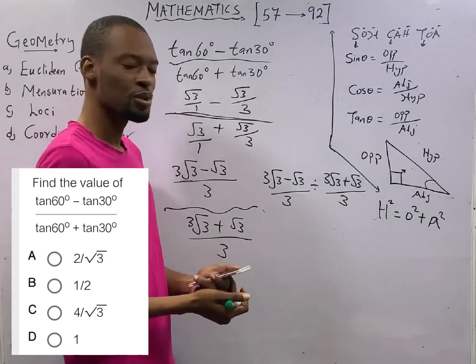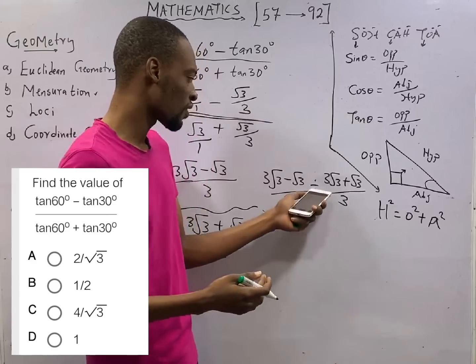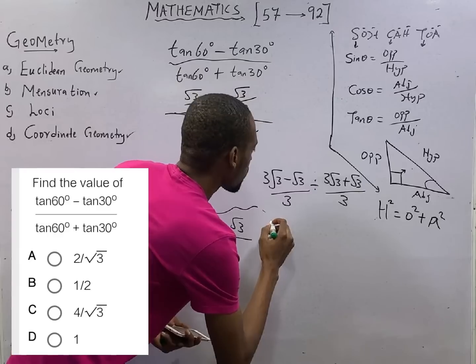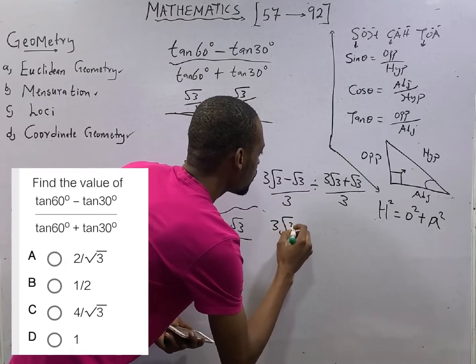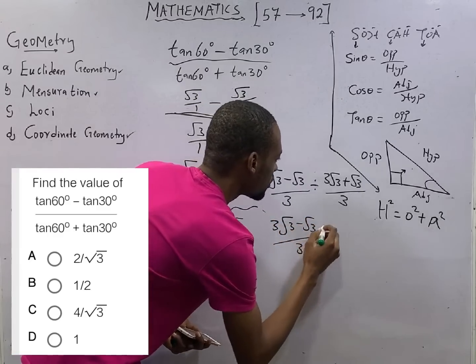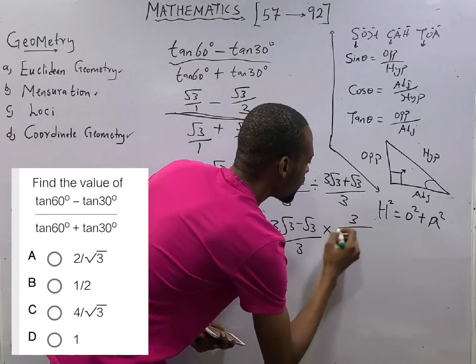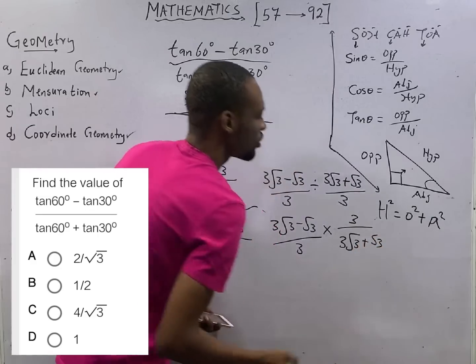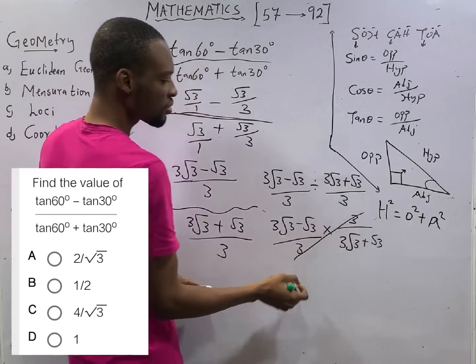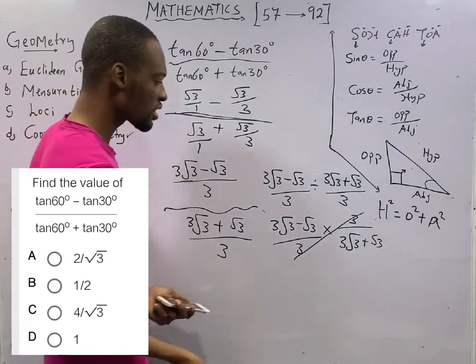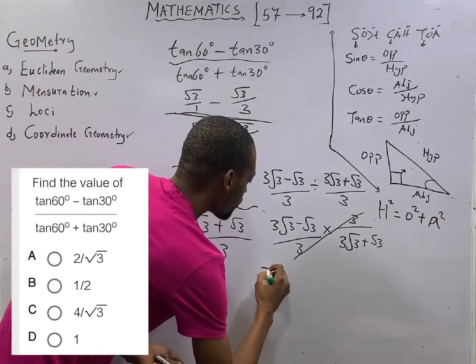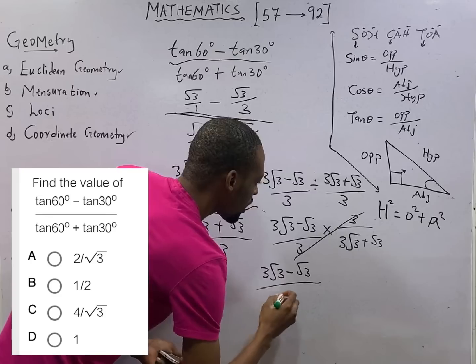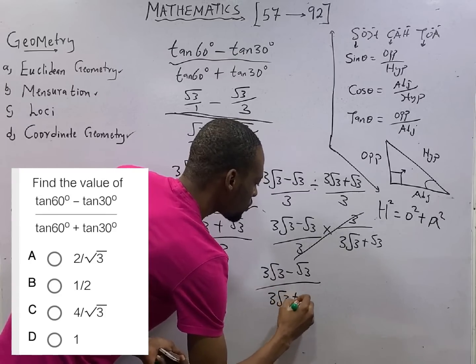If you change the division to multiplication, this theory will definitely cancel this theory, giving us another fraction. So this is the same thing as 3 root 3 over 3 over 3.